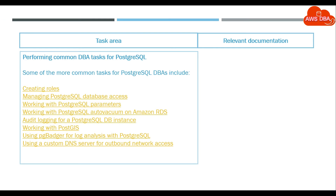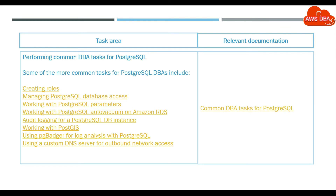Performing common DBA tasks for PostgreSQL. Some of the more common tasks for PostgreSQL DBAs include: Creating roles, Managing PostgreSQL database access, Working with PostgreSQL parameters, Working with PostgreSQL auto-vacuum on Amazon RDS, Audit logging for a PostgreSQL DB instance, Working with PostGIS, Using PG Badger for log analysis with PostgreSQL, and Using a custom DNS server for outbound network access. See: Common DBA tasks for PostgreSQL.